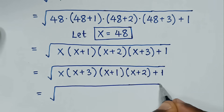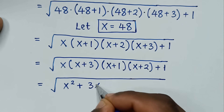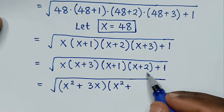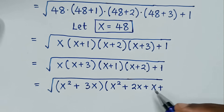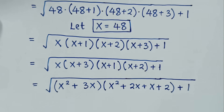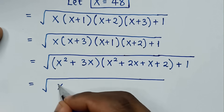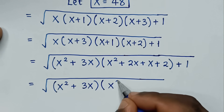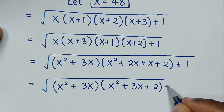It will be equal to square root of (x²+3x) times (x²+2x+x+2) plus 1, which simplifies to square root of (x²+3x) times (x²+3x+2) plus 1.